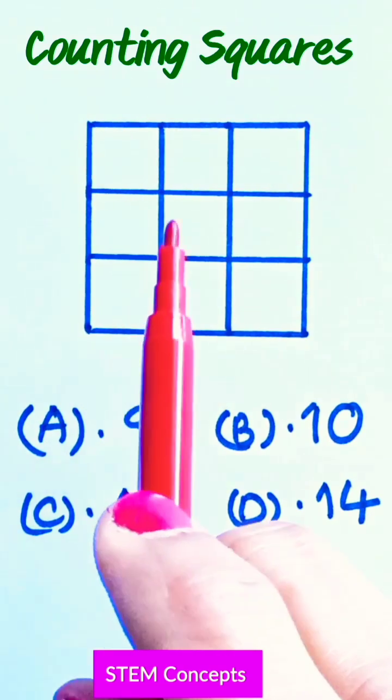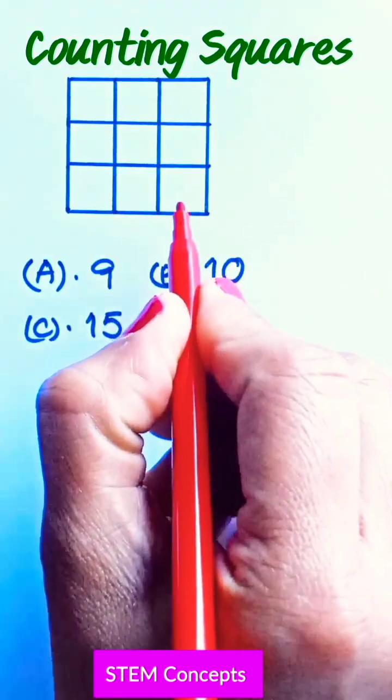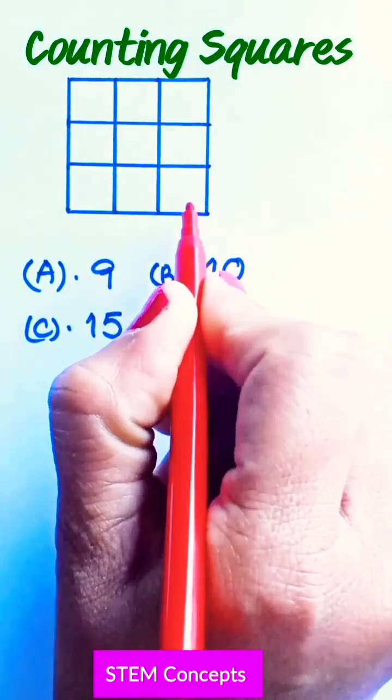Let us count the number of hidden squares present in the given figure in just 10 seconds. Before going to count, let us note how many rows and columns are present in the given figure.